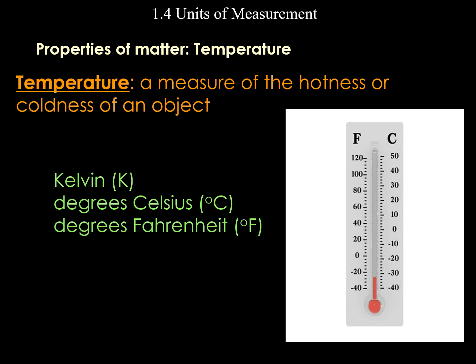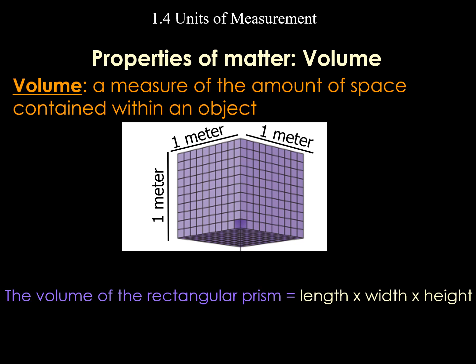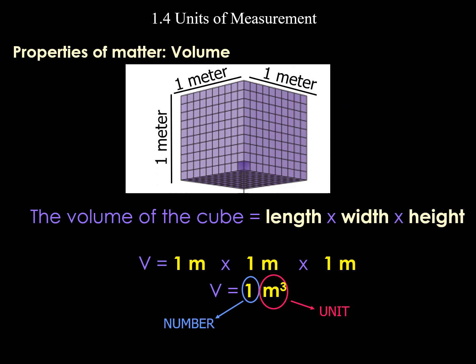For temperature: in the United States we use Fahrenheit; in other parts of the world, Celsius; in the science world, Kelvin. Volume is a measure of the amount of space contained within an object. If length, width, and height are each in meters, the unit for volume will be meters cubed. Multiplying 1 × 1 × 1 = 1 meter cubed.